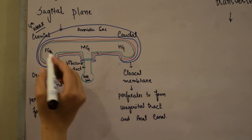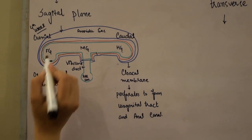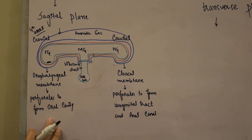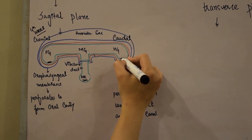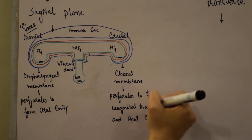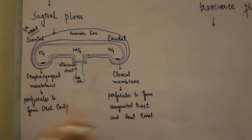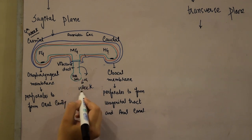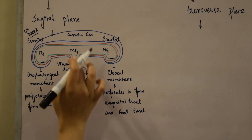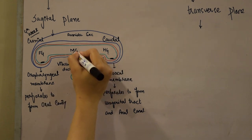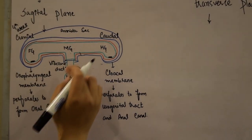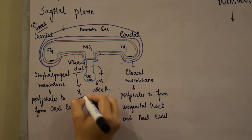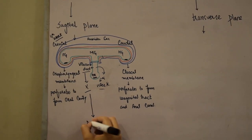There are two membranes present: one in the foregut called the oropharyngeal membrane, which will perforate to form the oral cavity, and one in the hindgut called the cloacal membrane, which perforates to form the urogenital tract and anal canal opening. Around the sixth week, the vitelline duct is obliterated and a ligament forms connecting the midgut to the anterior abdominal wall. If the vitelline duct does not obliterate, Meckel's diverticulum is formed.